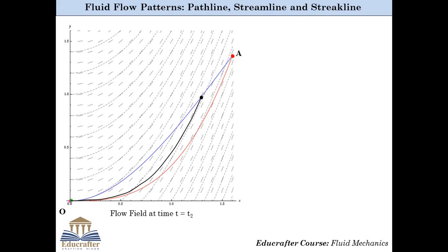Similarly, a black particle was at point O at some earlier instant of time and has currently moved to another point following the black path — and hence this black line is the pathline of the black particle. In the same way, the pink particle has moved to its current location, and the green particle has moved to its location. All four particles have earlier passed through point O of the domain, and hence the line joining these four particles is known as the streakline corresponding to point O.